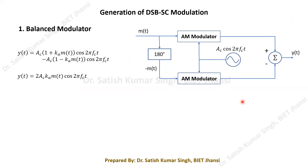This is how a balanced modulator generates the DSBSC signal using two conventional AM modulators in a balanced configuration. In the next lecture, the ring modulator — another prominent method for generating DSBSC signals — will be discussed. Thank you for watching.